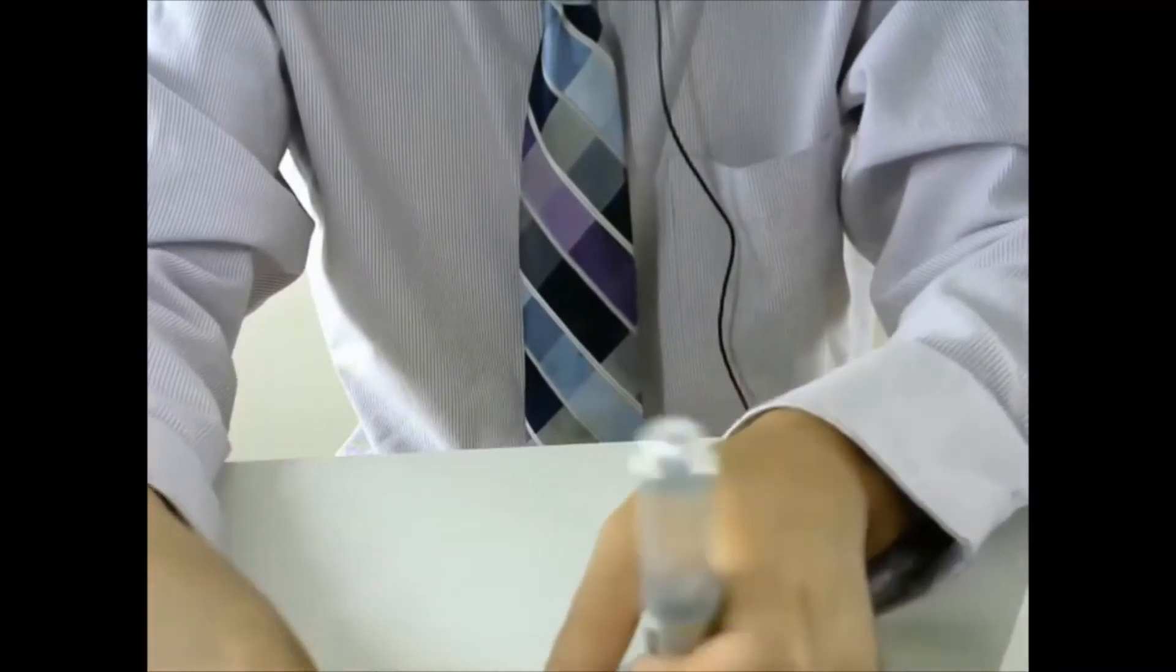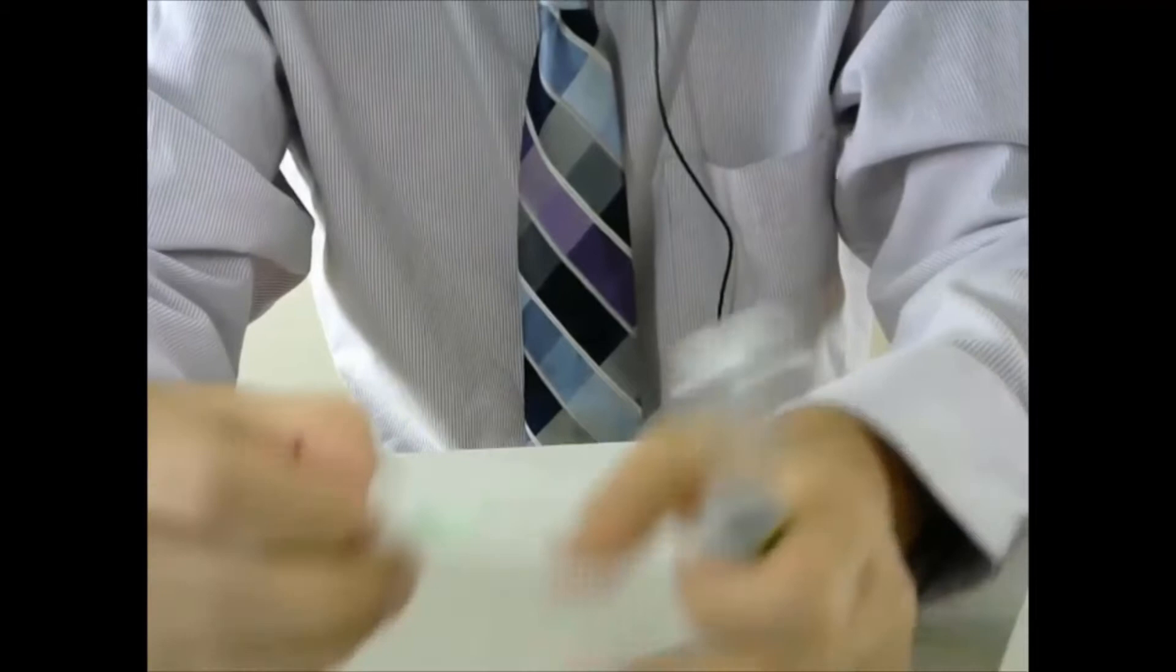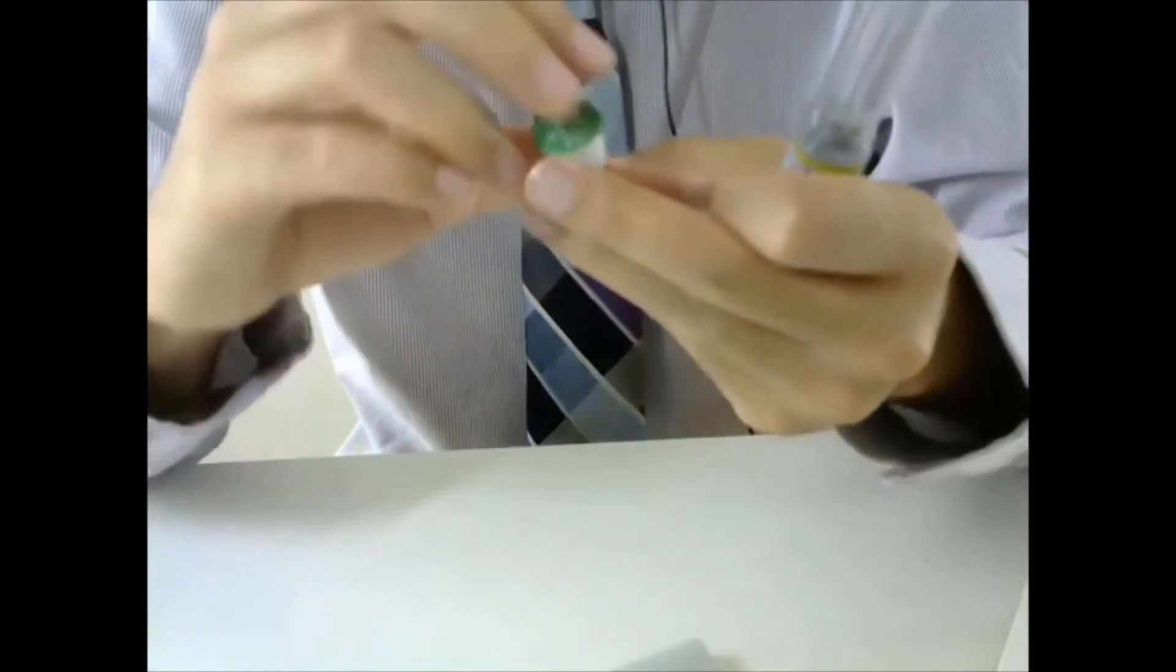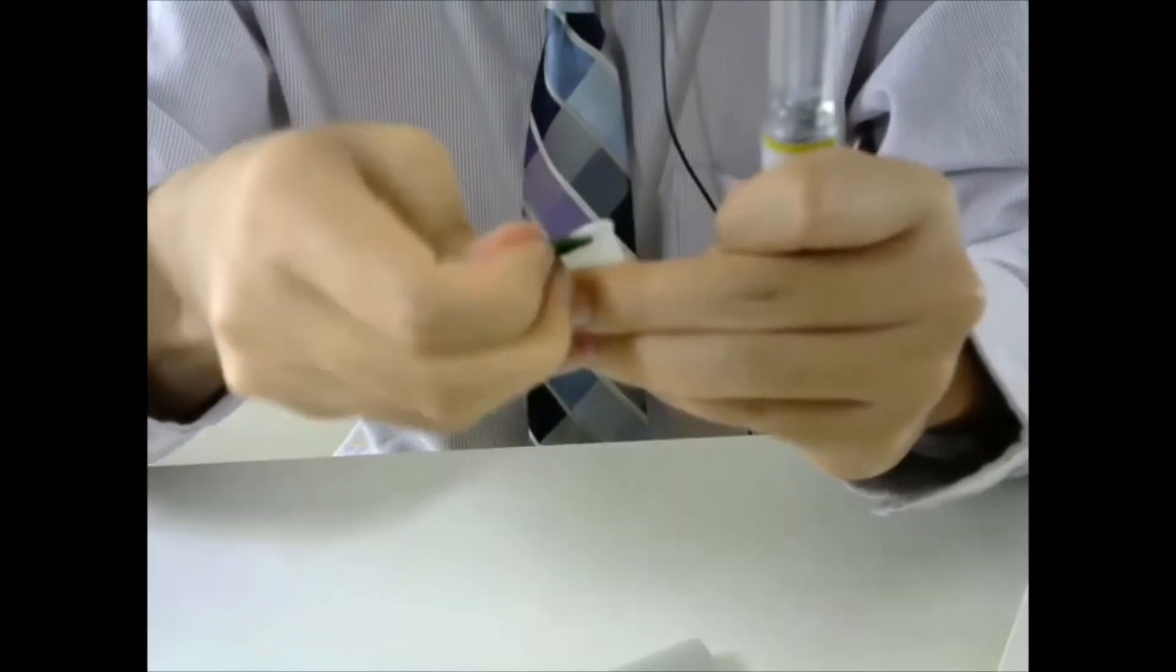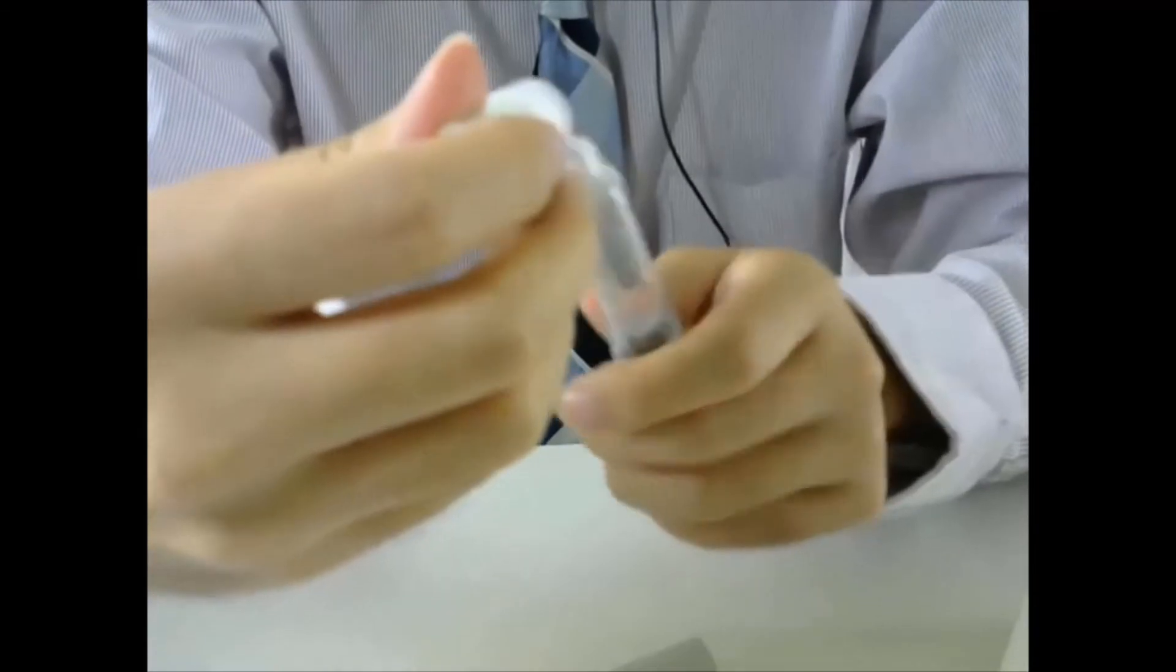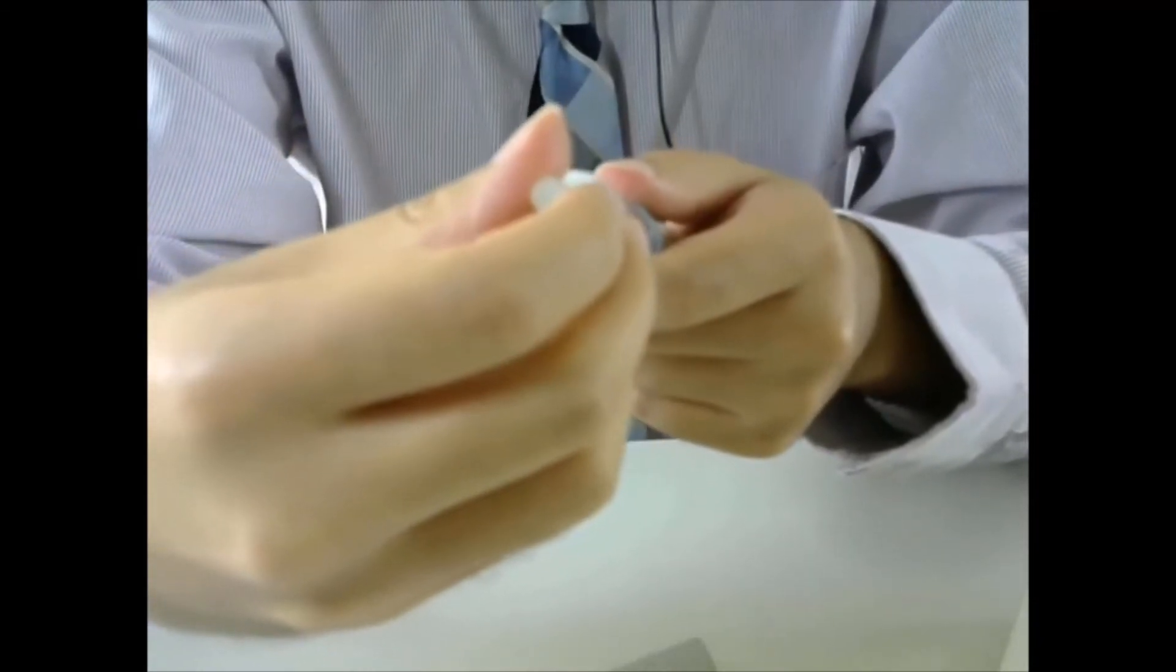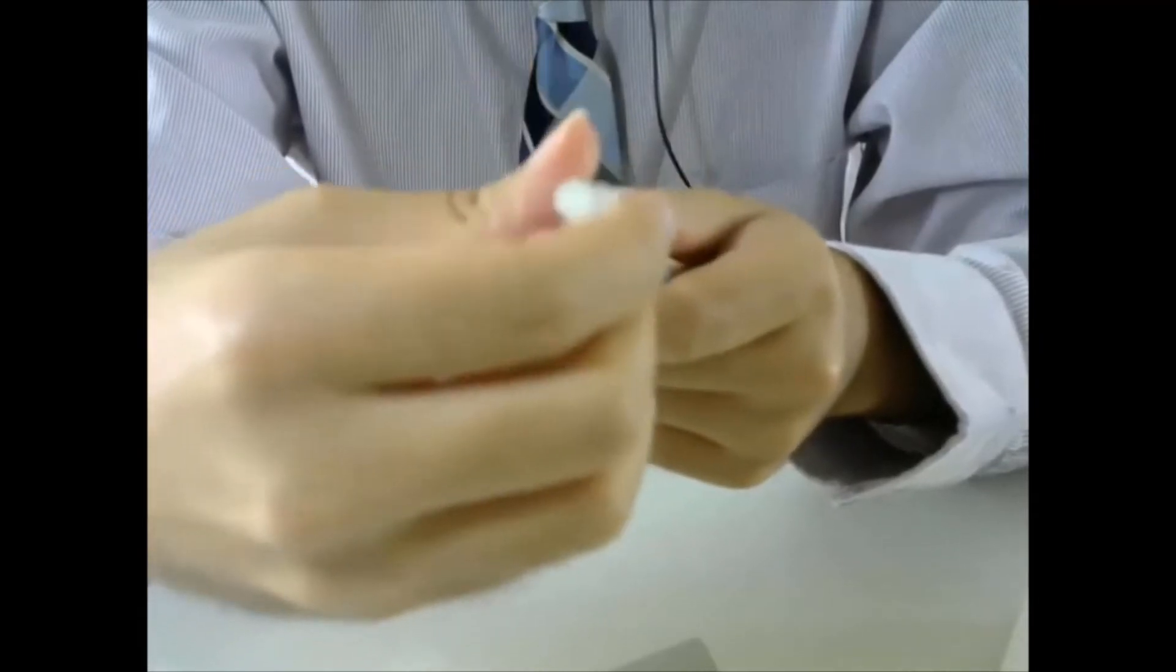The next step, we will need to put the needle on. Get a needle from the box. You can see the needle is inside. So push the needle onto the top of the pen and screw it in.